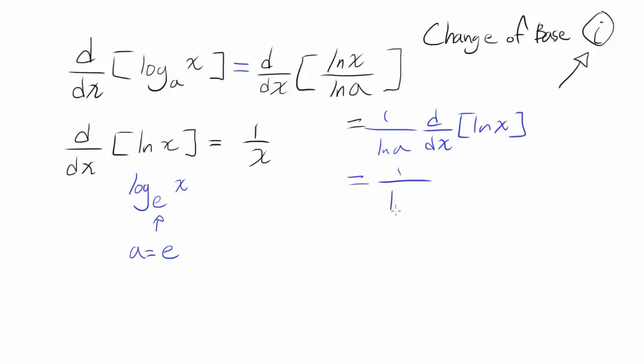And we know the derivative of natural log of x is 1 over x. So our derivative of log base a of x turns out to be 1 over x times natural log of a.